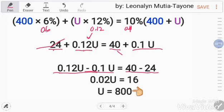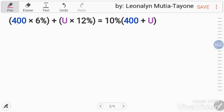So, 0.12 minus 0.1, and that is 0.02, equals 40 minus 24, that is 16. So, 16 divided by 0.02, that is 800. Now, let's double check.